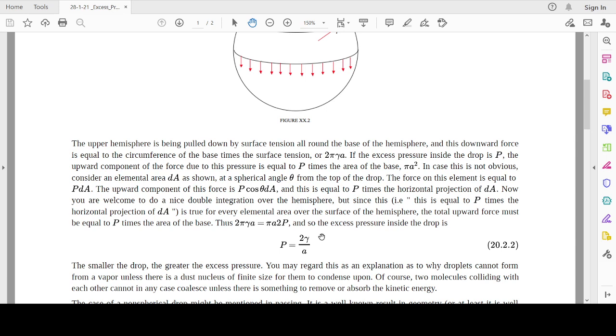The formula is 2γ/a, or 2s/r, or 2t/r. Two times surface tension divided by radius of the drop. Gamma represents surface tension and a represents radius of the drop.